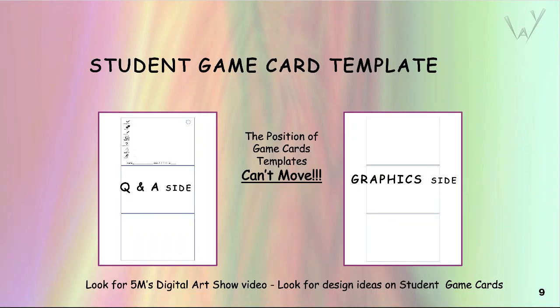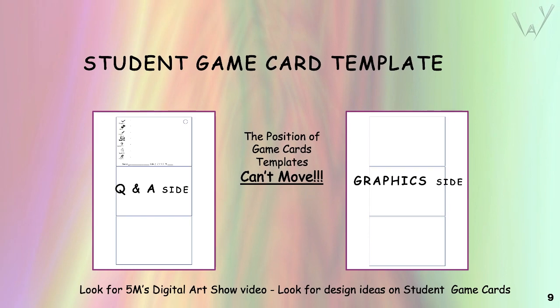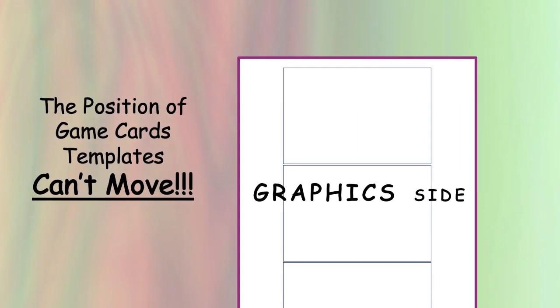When you open a student or player's template, you'll see two pages. Here's an example of the game's organic nature — improvement ideas are never ending. I've decided just now to add a third page to templates so you don't have to. On the Q&A side, you'll insert a background image and create Q&As for the seven games. On the graphics side goes, you guessed it, the graphics.